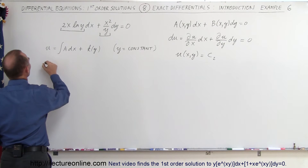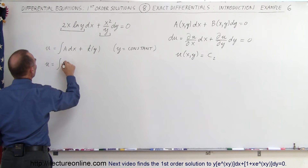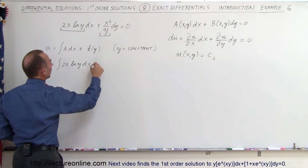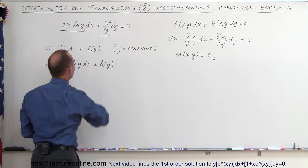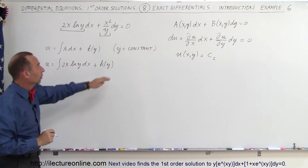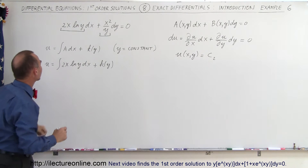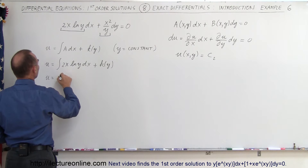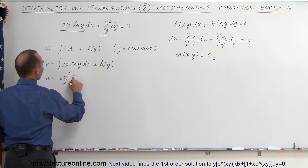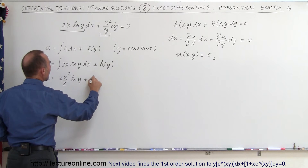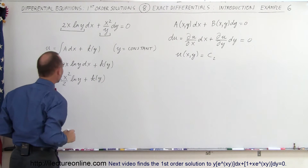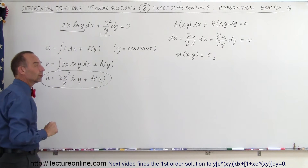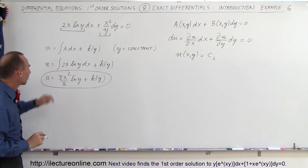Plugging in what A is equal to, we can say that u is equal to the integral of 2x times the natural log of y dx plus the constant of integration k of y. Since y is a constant, the natural log of y is also a constant, so u can be written as 2x squared over 2 times the natural log of y plus k of y. We can simplify by canceling the 2's to get x squared times the natural log of y plus k of y.